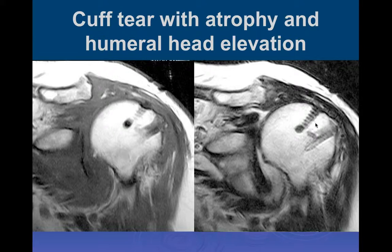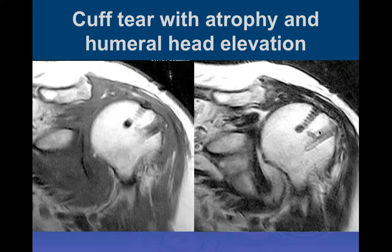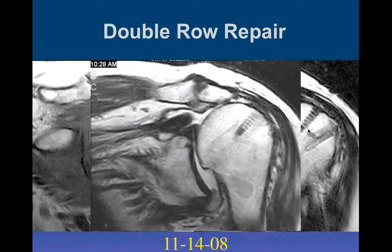Here's an example of rotator cuff surgery repair with a tear of the construct. This is a double-row technique with suture anchors in a proximal row just proximal to the normal footplate insertion, and a distal row about one centimeter or less distal to the peripheral portion of the footplate. We published a paper in the American Journal of Sports Medicine showing better outcome using the double-row technique if the rotator cuff tear was greater than one centimeter, but not everybody's data has agreed with that.